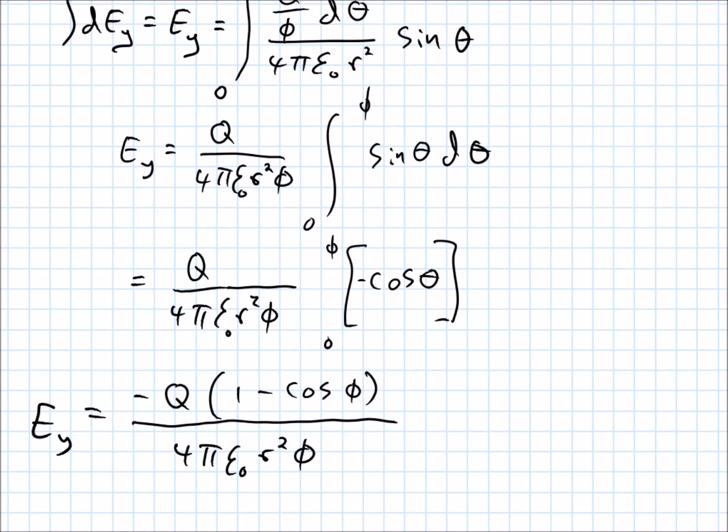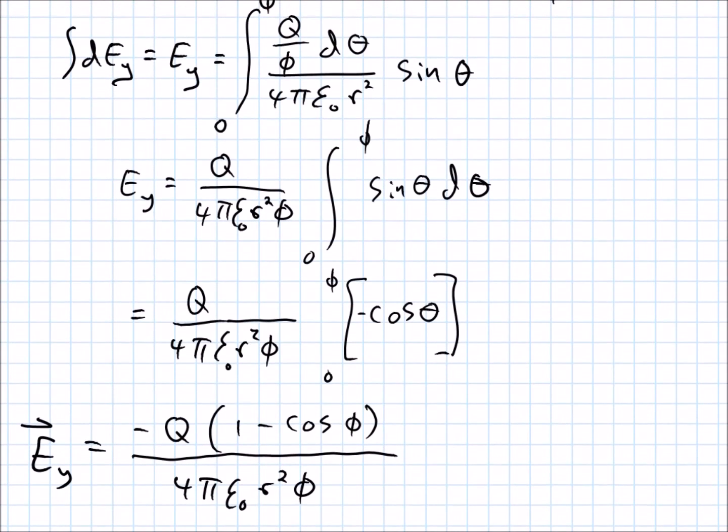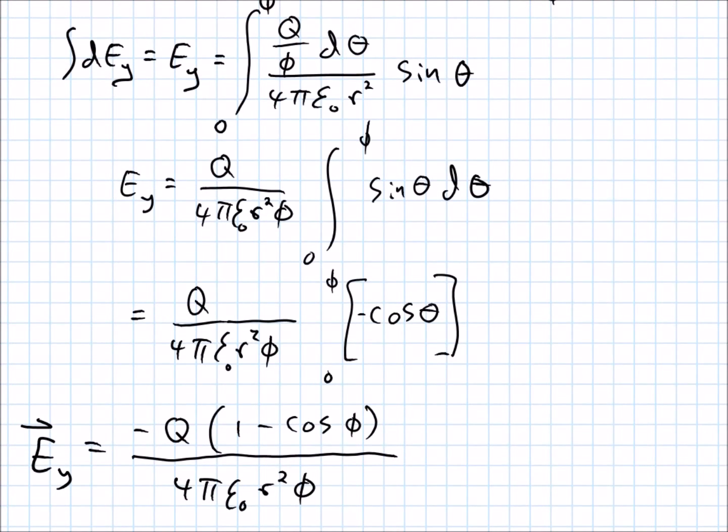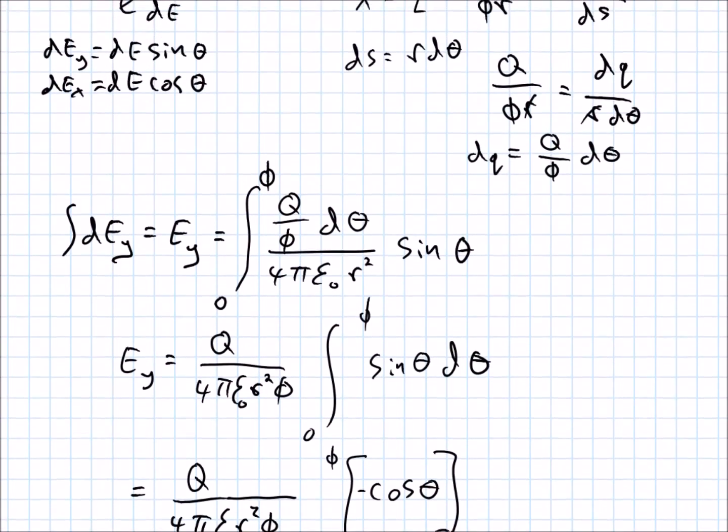So, that is the y component of our electric field. Now, if this phi was, like pi or pi over 2 or something, we could plug in and get a nice, more concise answer. But there that component is. And now, we've actually done most of the work. The x component is, recall up here, that dey was involving sine. Dex is pretty much the same thing, just involving cosine. So, let's see what steps we can kind of skip here.